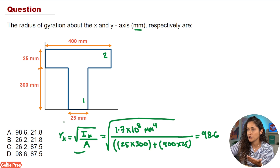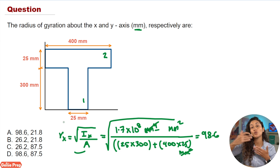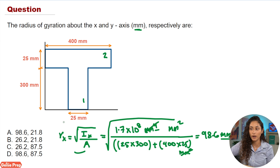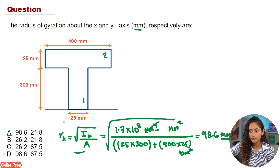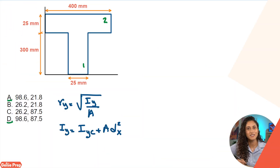Looking at the units: Ix is in mm⁴, area is in mm², those cancel leaving mm², and taking the square root gives us millimeters — exactly the unit we want. Looking at the multiple choice, the answer must be either A or D since rx is 98.6. Now let's solve for the radius of gyration about the y-axis.